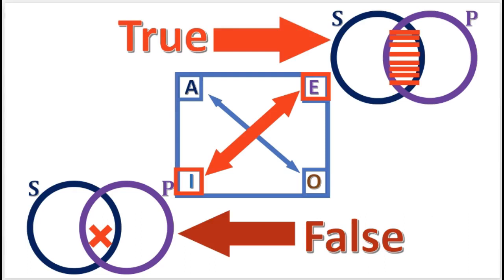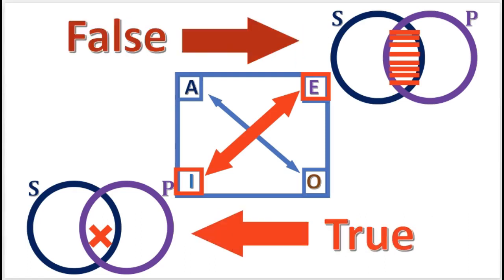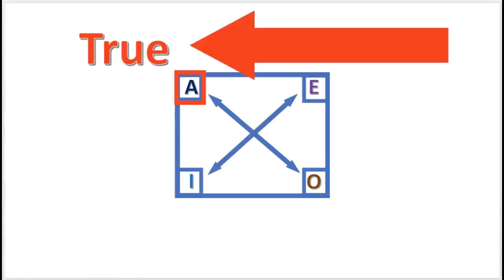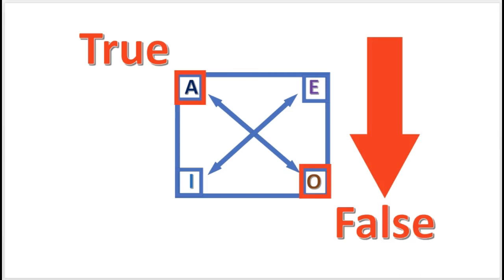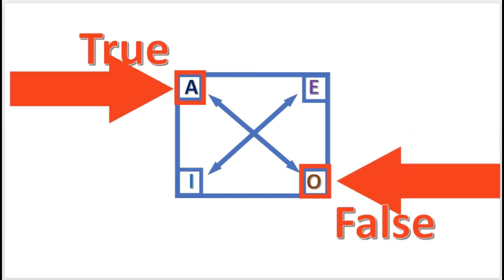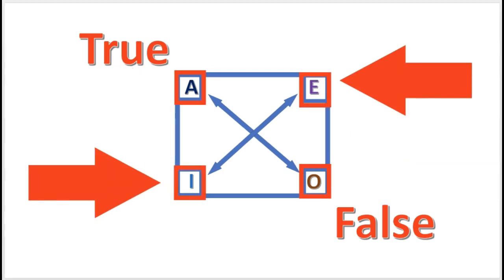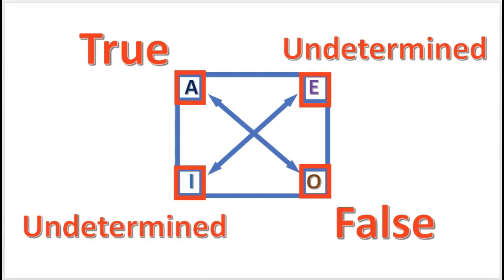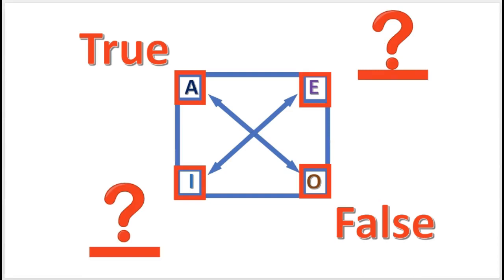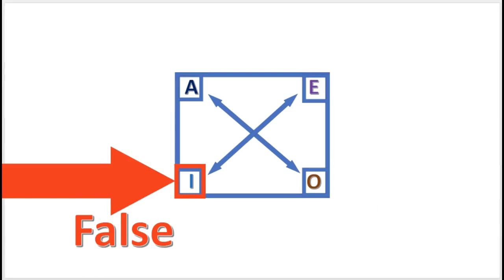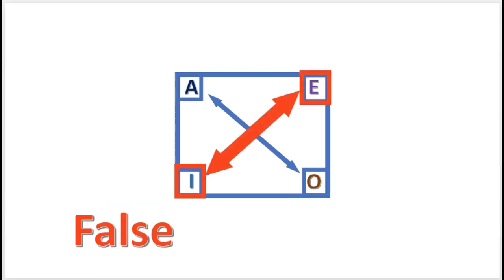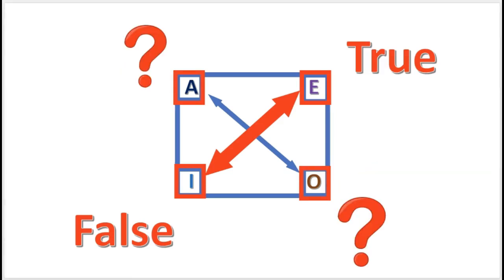When two statements are contradictory, it means that they necessarily have opposite truth values. So if a certain A proposition is true, then the corresponding O proposition is necessarily false. Since these propositions are not related to the E and I propositions, the E and I propositions have undetermined truth value. The undetermined truth value can be represented with a question mark. And if a certain I proposition is false, then the corresponding E proposition is necessarily true. The A and O propositions have undetermined truth value.